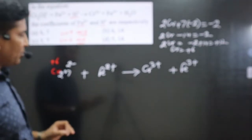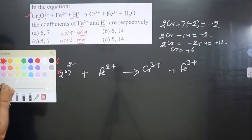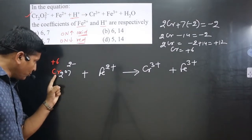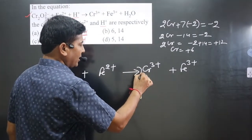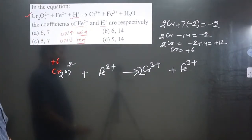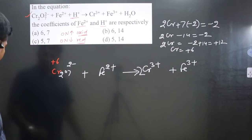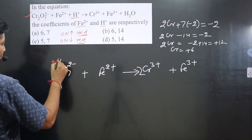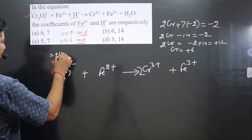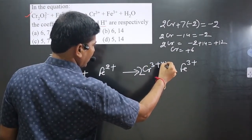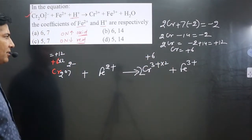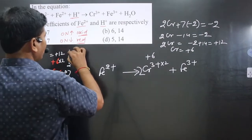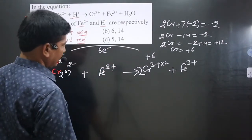Always balance the number of atoms before balancing the charge. There are 2 chromium on the left but only 1 chromium on the right, so we multiply Cr3+ by 2. With 1 Cr at +6, 2 Cr gives +12; with 1 Cr at +3, 2 Cr gives +6. The difference in oxidation number is 12 minus 6 equals 6 electrons for chromium.